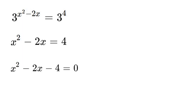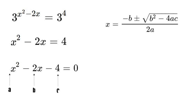Now, in order to solve this, we're going to use the quadratic equation. And the quadratic equation is x is equal to minus b plus or minus the square root of b squared minus 4ac over 2a. Now, in this equation, our a value is going to be 1, our b value is negative 2, and our c value is negative 4. So, let's plug that in.